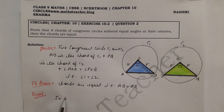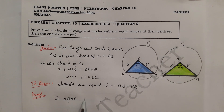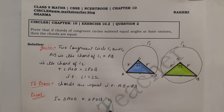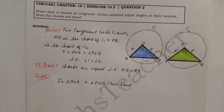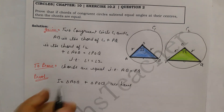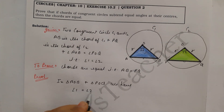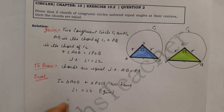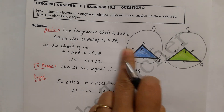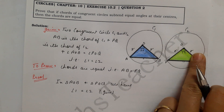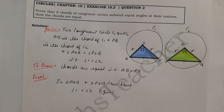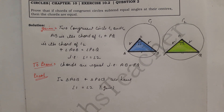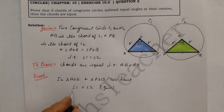In triangle AOB and triangle POQ, we have what was given before. We have angle 1 equal to angle 2, and the reason to write here is: given.